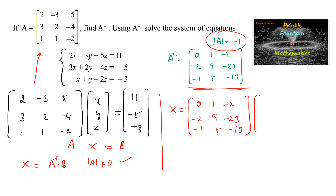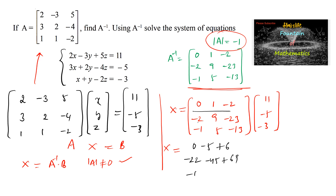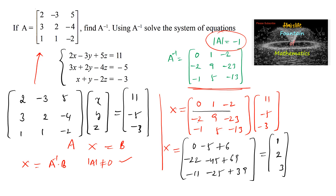Multiplying by B = [11; -5; -3] row by column: first row gives 0(11) + 1(-5) + (-2)(-3) = 0 - 5 + 6 = 1. Second row gives -2(11) + 9(-5) + (-23)(-3) = -22 - 45 + 69 = 2. Third row gives -1(11) + 5(-5) + (-13)(-3) = -11 - 25 + 39 = 3.